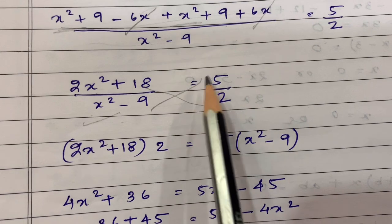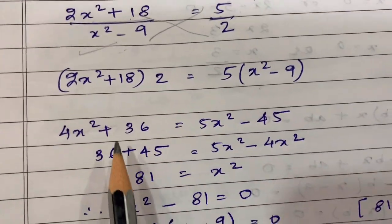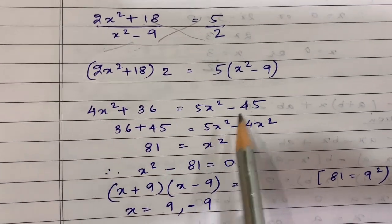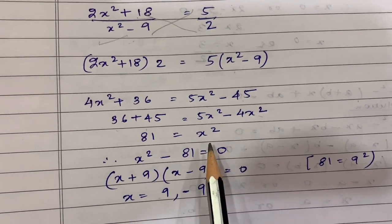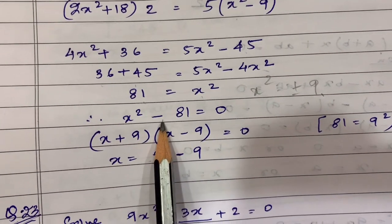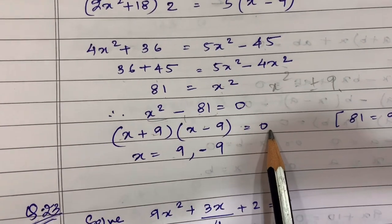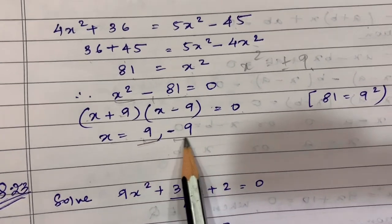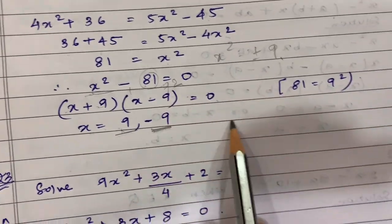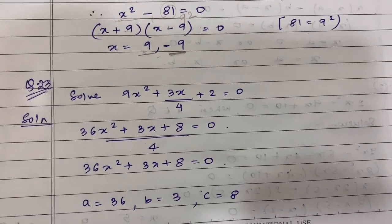Cross-multiplying gives 4x² + 36 = 5x² - 45. Taking common terms together: x² = 81. This means x = ±9, or using a² - b² = (a+b)(a-b) = 0, we get x = 9 and x = -9. You just need to apply the basics and the solution comes easily.